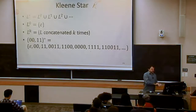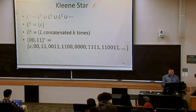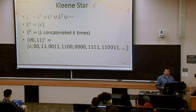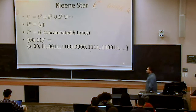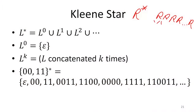You can think about this as an arbitrary number of concatenations. So a string matches R star if there was some R, R, R, etc. — there are some number of R's that I could concatenate together that would match that string. Is there some way I can split it up into some number of chunks such that every single one of those chunks matched that regular expression R?